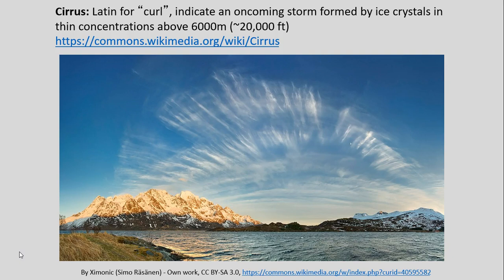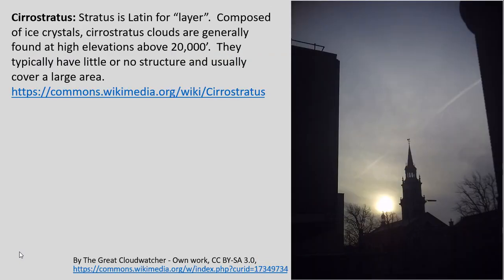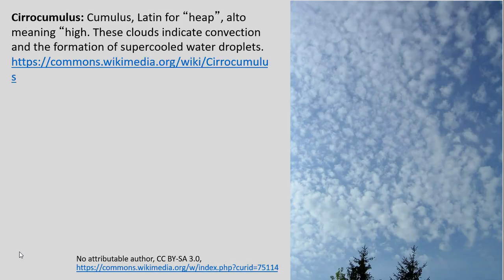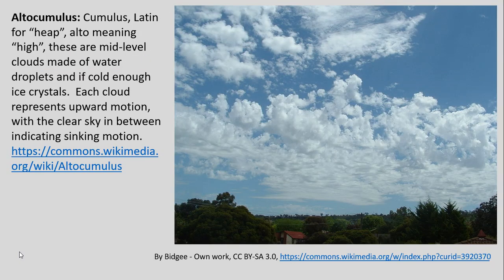So, cirrus clouds are these high-level clouds. These clouds are generally made of ice crystals. We have the cirrus, cirrostratus — the stratus name indicating more of a layer — and then our cirrocumulus. These are very high clouds and largely made of ice crystals. Cirrocumulus clouds can have some super-cooled water droplets in them as well, but generally cirrus clouds are made of ice or ice crystals.